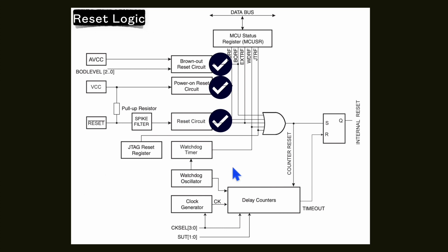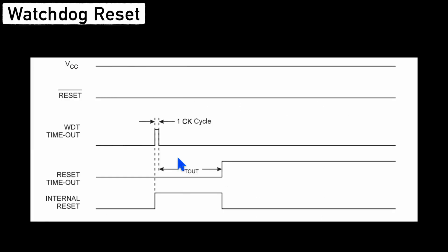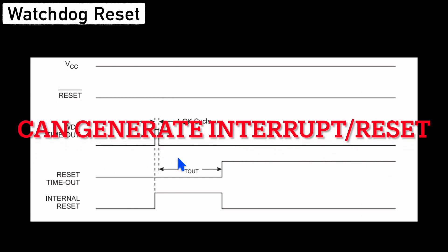For the JTAG reset, you just change the register value to logic 1 and that will work. In the Watchdog timer, you have to enable it first. The Watchdog can be configured to either perform an interrupt, reset the microcontroller, or do both. You can configure the timing for the Watchdog.